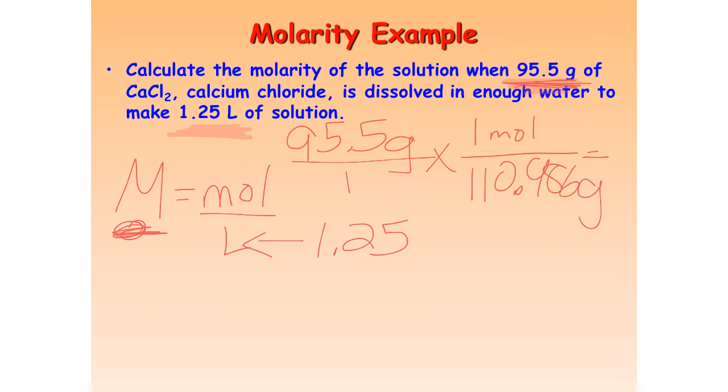So we get 95.5 divided by that molar mass, and we find out that our moles are 0.86. So we got 0.86 moles divided by our liters, which was 1.25, and that's going to give us our molarity, so 0.86 divided by 1.25, and our molarity is 0.688 molar. So there's your answer.